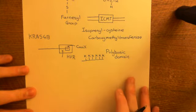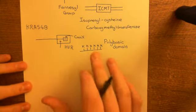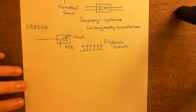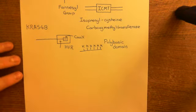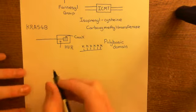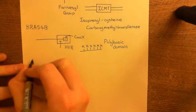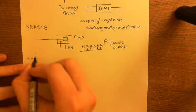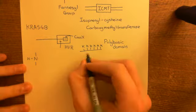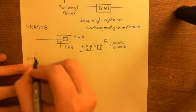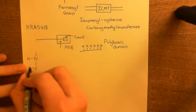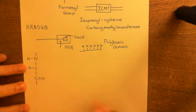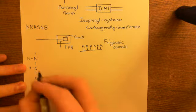Let me show you the structure of lysine, and then you'll see why this is called the polybasic domain, and how having this polybasic domain helps KRAS-4B attach to the plasma membrane. I'll draw it as a residue within the polypeptide. The amino group is bound to the carboxylic acid group of the preceding amino acid; here's the alpha carbon, and then the carboxylic acid group bound to the amino group of the next amino acid.